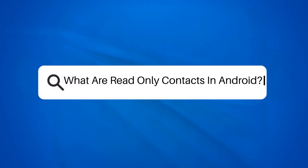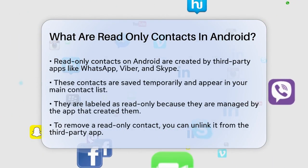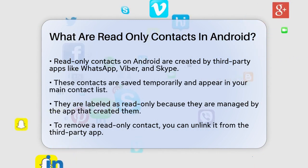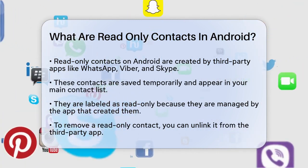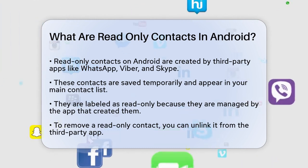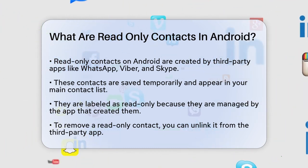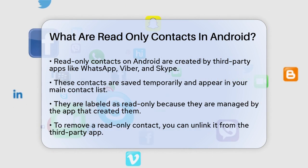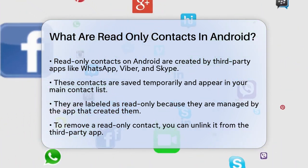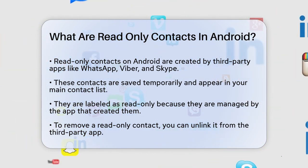What are read-only contacts in Android? If you've ever tried to delete a contact on your Android phone only to find out it's labeled as read-only, you're probably wondering what that means and how to get rid of it. Let's break it down. Read-only contacts are contacts that are saved by third-party applications like WhatsApp, Viber, Skype, and others. These contacts are typically saved temporarily on your device's storage and appear in your contact list.